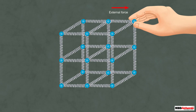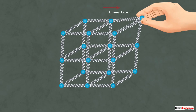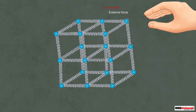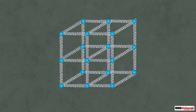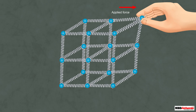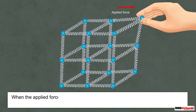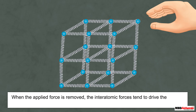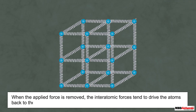Now try to displace a ball in the spring-ball model and see what happens. You will notice that once the external force is removed, the ball comes back to its original position. This happens because when the applied force is removed, the spring system — that is, the inter-atomic forces — tends to drive the atoms back to their original positions.